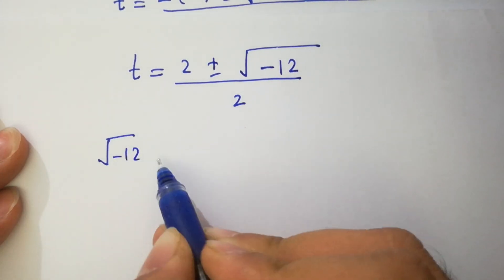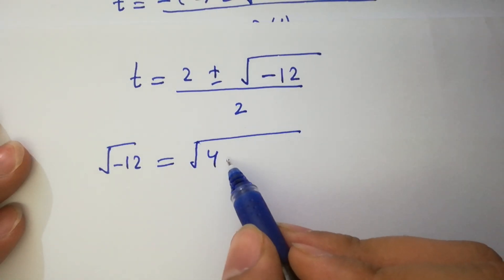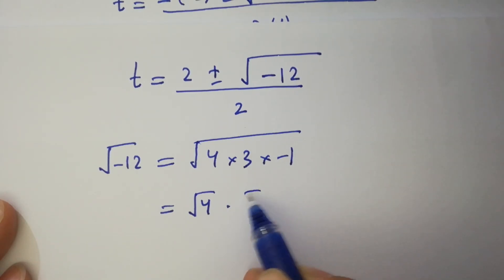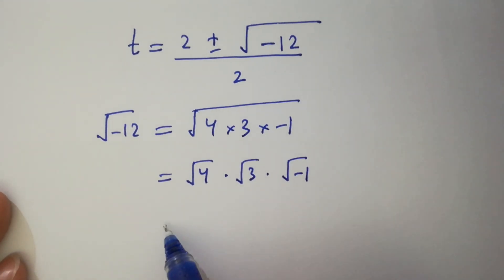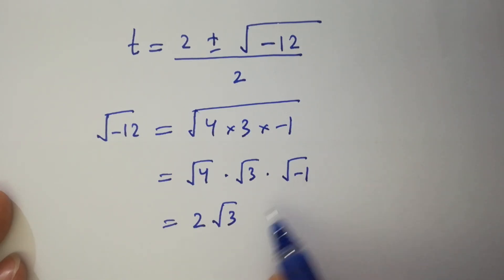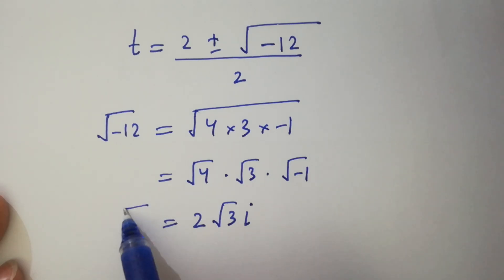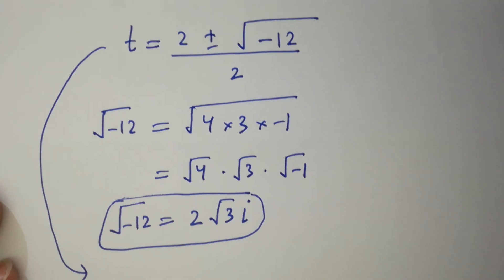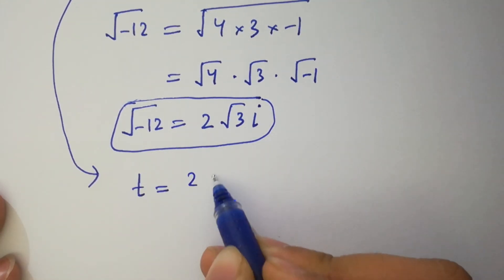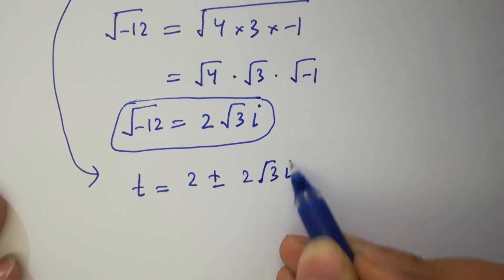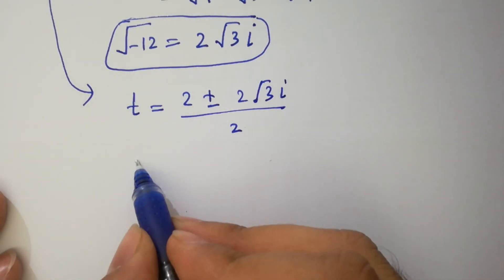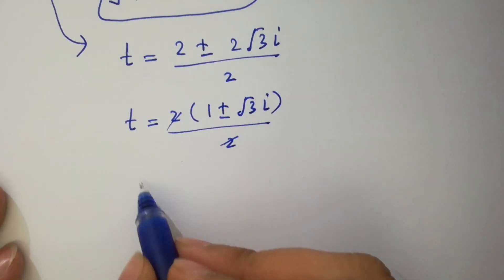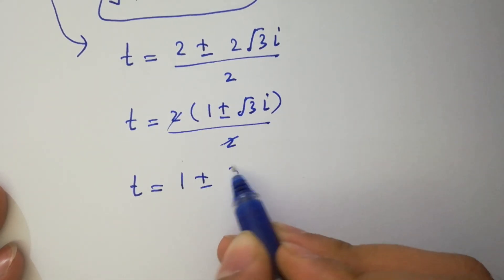Since minus 12 equals 4 times 3 times minus 1, we can write square root of minus 12 as square root of 4 times square root of 3 times square root of minus 1. Square root of 4 is 2, square root of 3 stays as is, and square root of minus 1 is i from complex numbers. So square root of minus 12 equals 2 square root of 3 i. Therefore t equals (2 plus or minus 2√3 i) over 2, and cancelling 2, t equals 1 plus or minus √3 i.